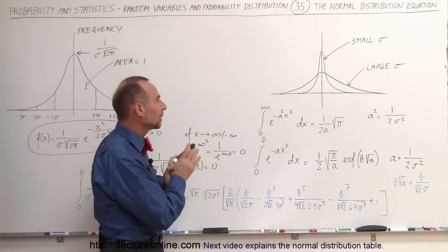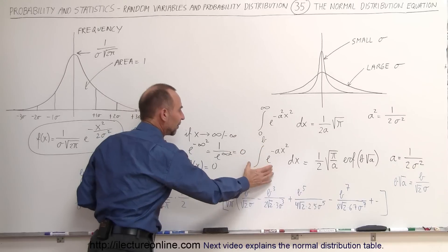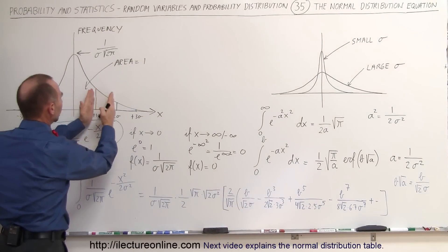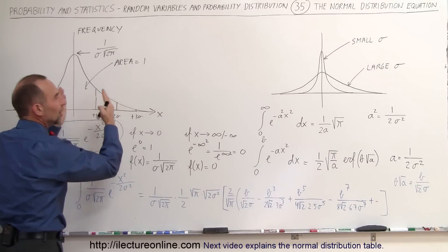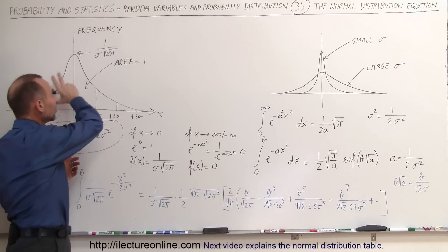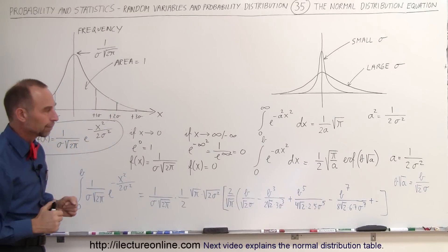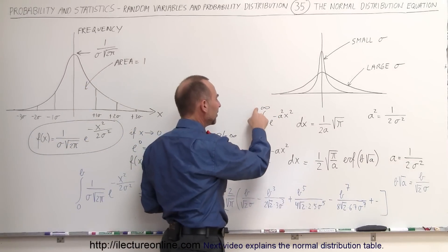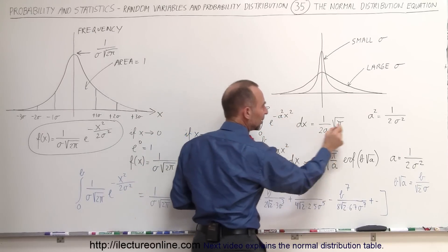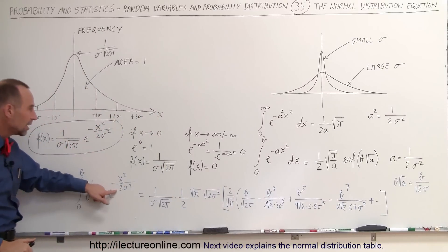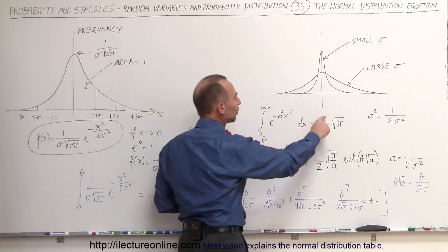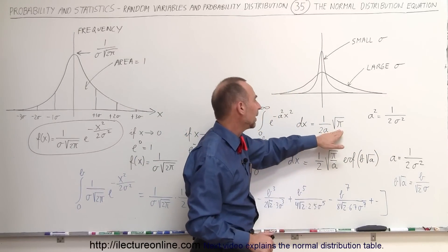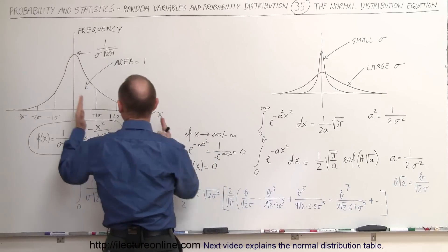Let's look at the integrals more closely. The integrals are defined to calculate the area underneath the curve — either the entire curve, which equals 1, or a section of the curve. The area underneath the curve represents the probability of certain events occurring. The general equation for the integral from 0 to infinity of e to the minus a squared times x squared, where a squared equals 1 over 2 sigma squared, is equal to 1 over 2a times the square root of pi. Plugging in a equal to 1 over 2 sigma squared, that area always equals one half.